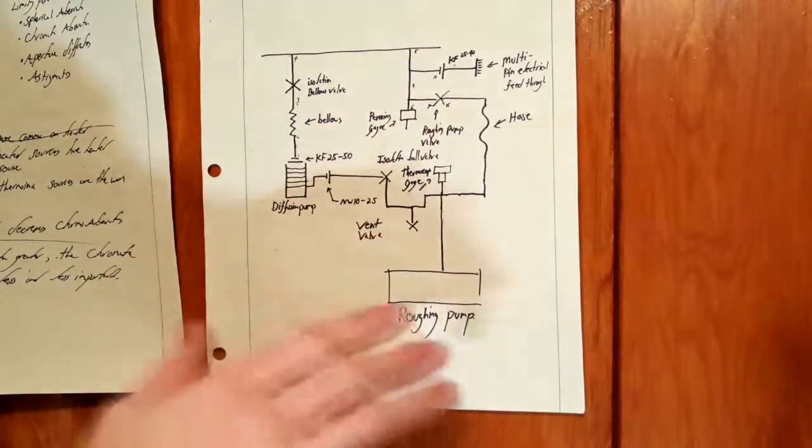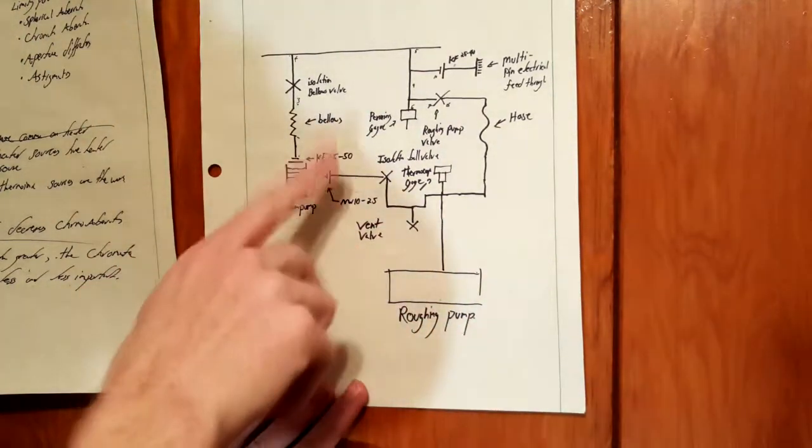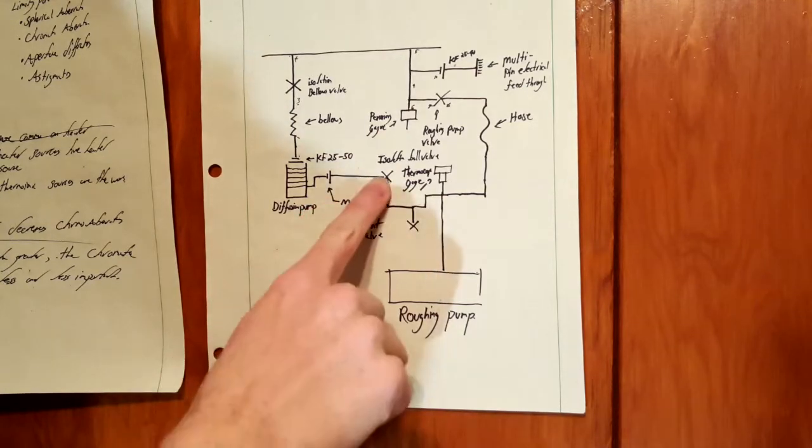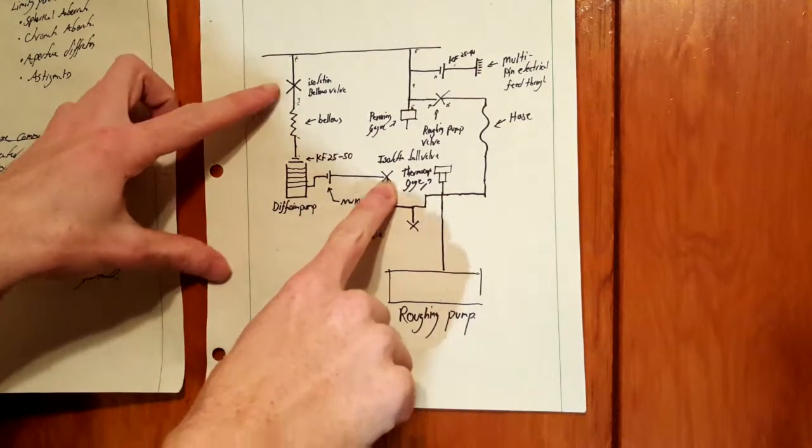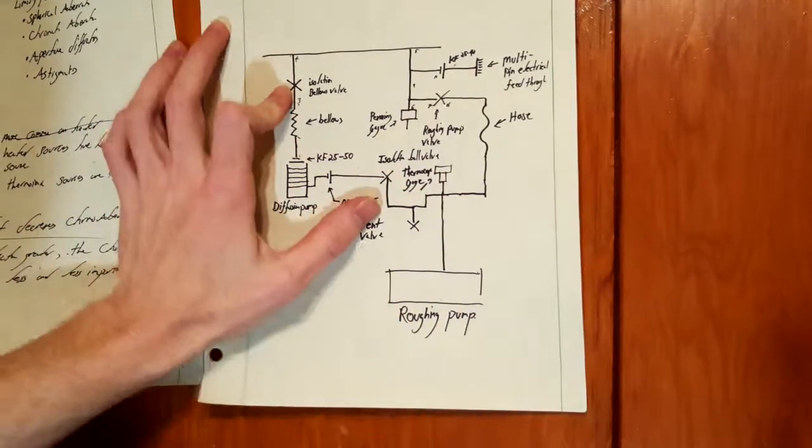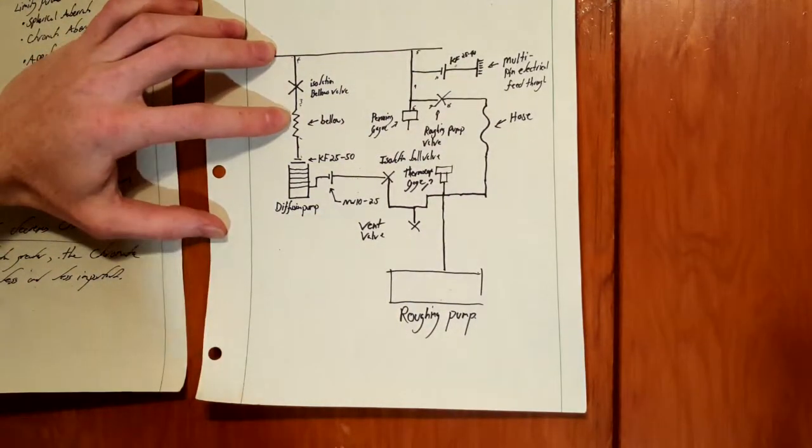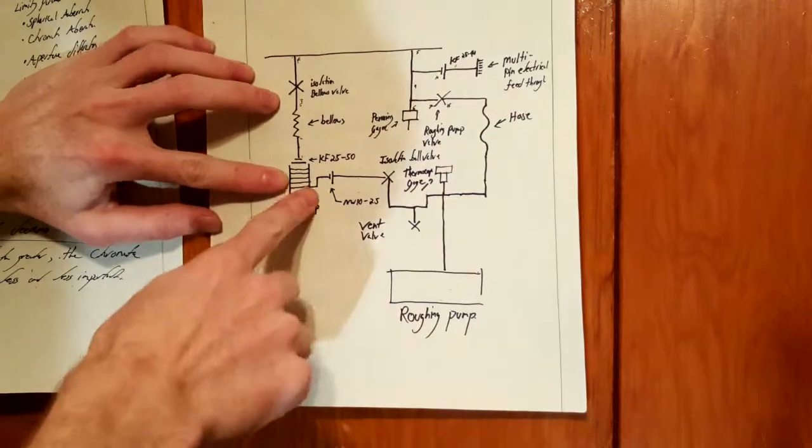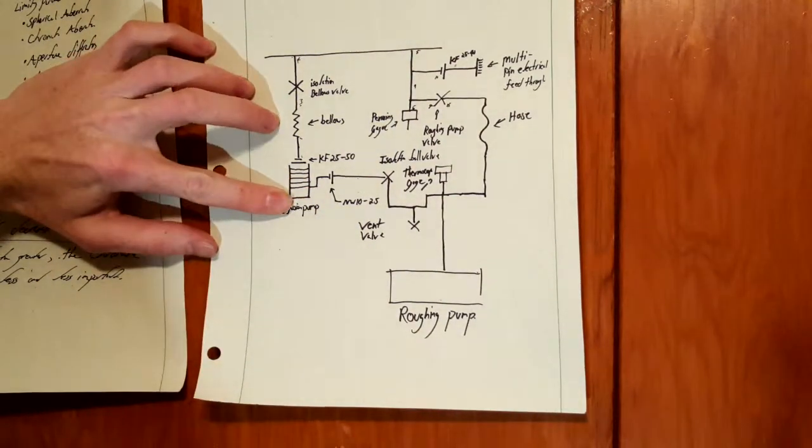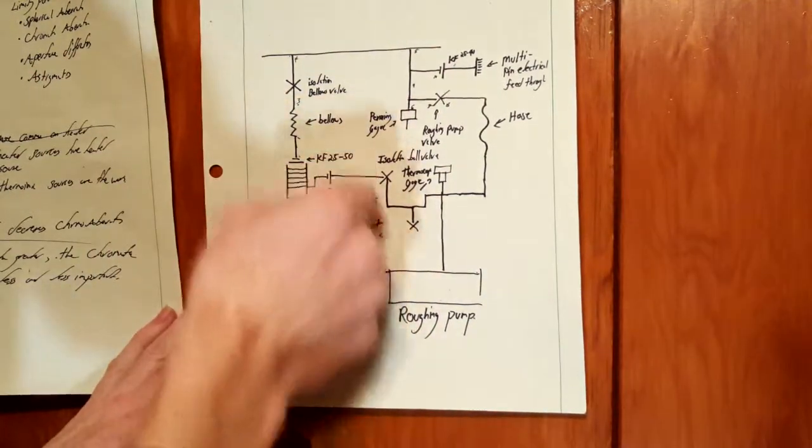A few differences from my original setup: in this one I have isolation ball valves and bellows within them between the diffusion pump and the rest of the chamber.